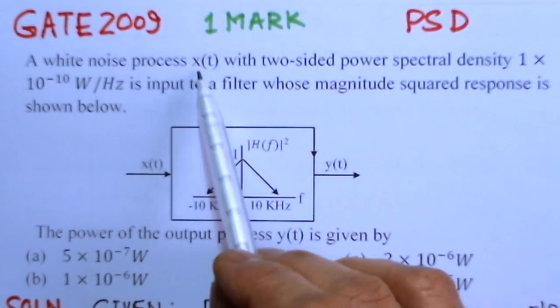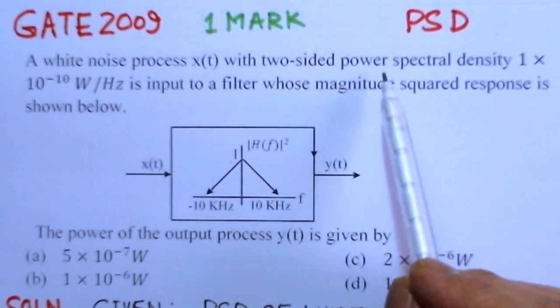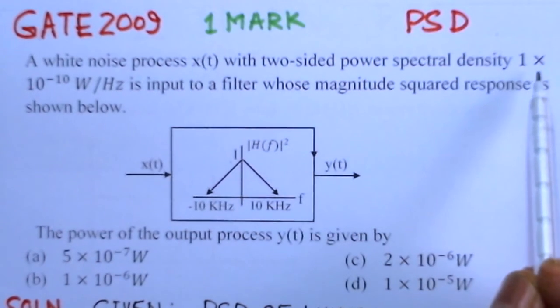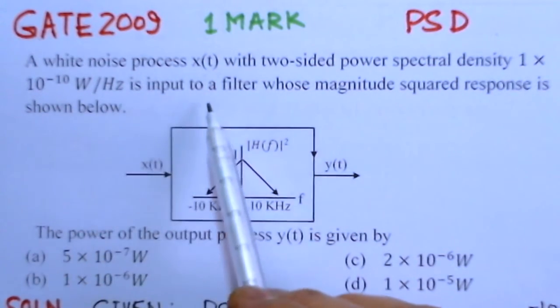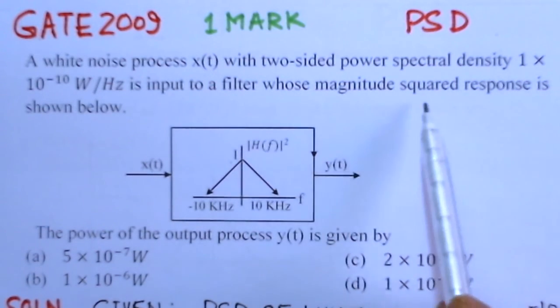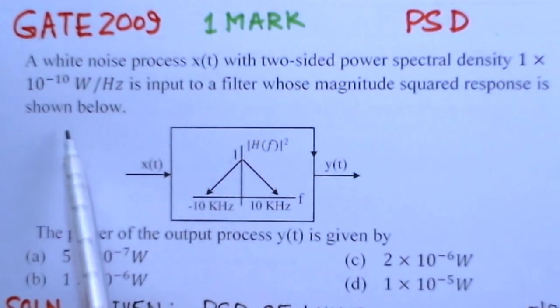A white noise process x(t) with two-sided power spectral density 1×10^-10 watts per hertz is input to a filter whose magnitude squared response is shown below.